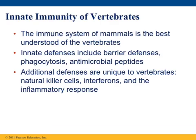When we get to the innate immunity of vertebrates, it changes a bit. The immune system of mammals is the best understood of all vertebrate species. It comprises barrier defenses, phagocytosis, and antimicrobial peptides just like in insects, but also includes additional defenses only found in vertebrates: specialized killer cells, interferons, and the inflammatory response.